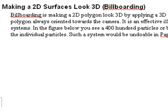We are in Chapter 3 of my book where we discuss billboarding. Billboarding is a way to make a 2D surface look 3D. Billboarding is making a 2D polygon look 3D by applying a 3D-looking texture and keeping the 2D polygon always oriented towards the camera. So as you move around, it's always facing you. PaperVision has a way of doing that. Let's go ahead and take a look and see what we've done.